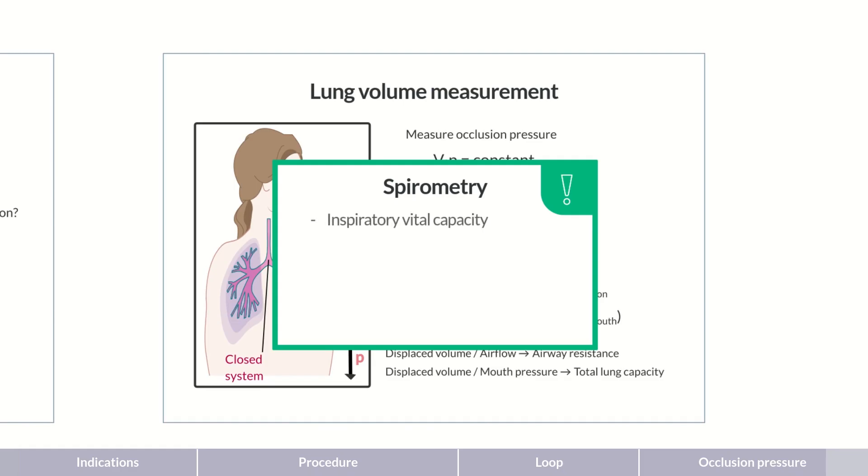Spirometry provides the inspiratory vital capacity, forced vital capacity, and the FEV1. Also, the PEF and FEFs are determined at different time points.